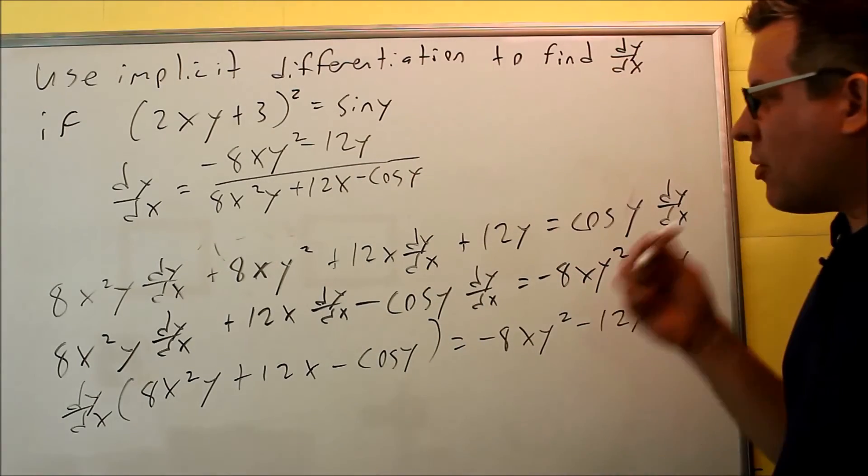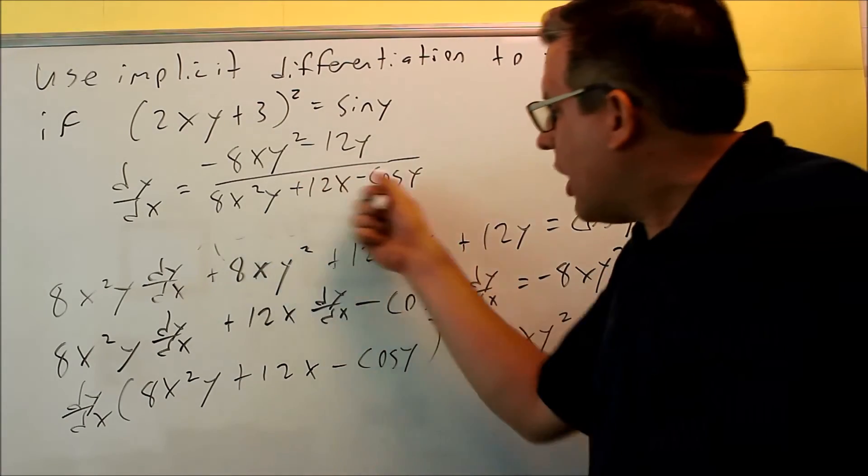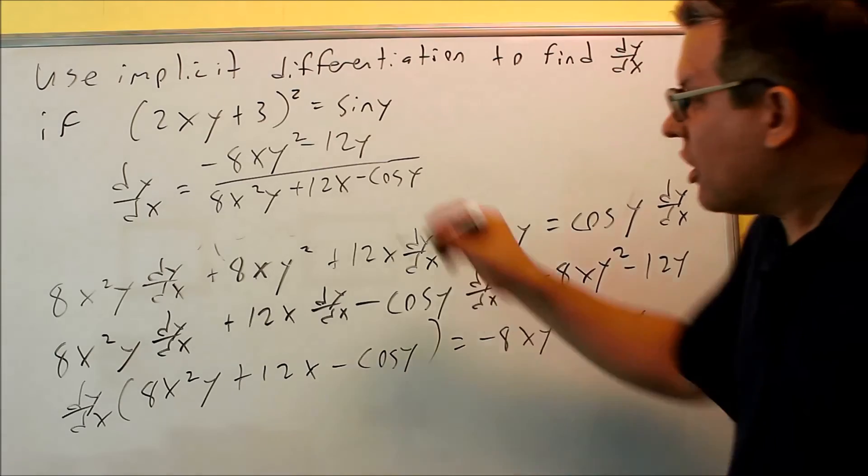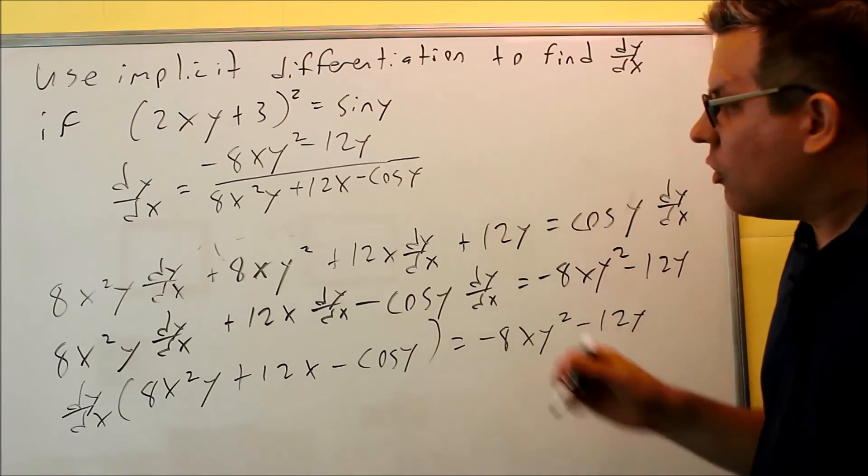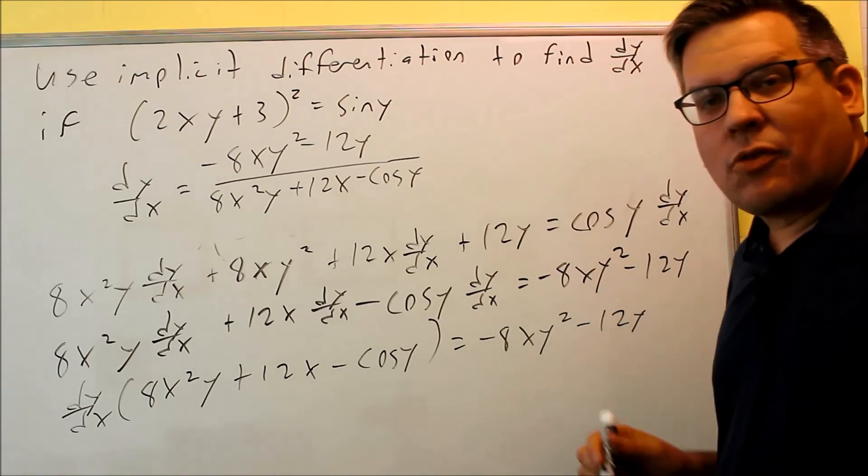You could factor out the top. It's not really going to help you very much. The bottom one you can't factor because you have different terms. You can't cross cancel, so because of that, this would be as far as you can go with your answer. Nothing more we can do to simplify that any further.